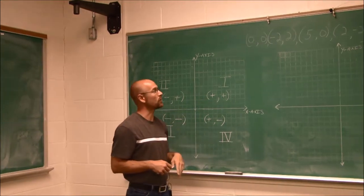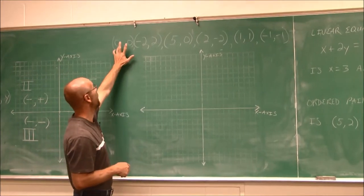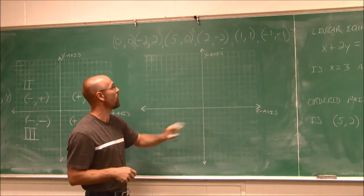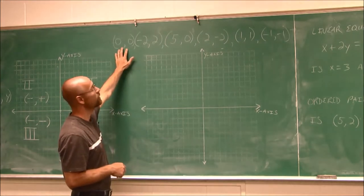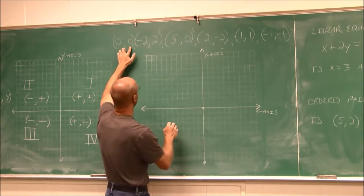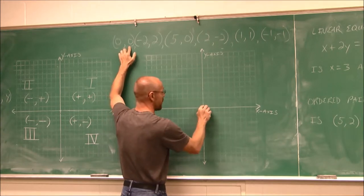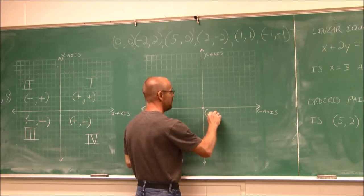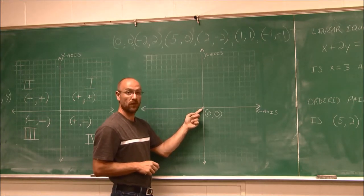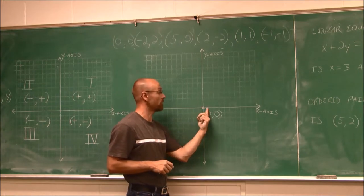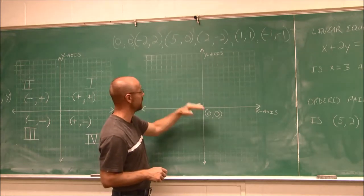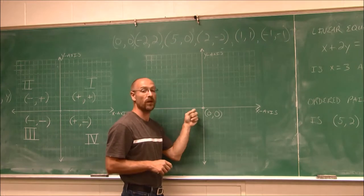Let's look at another graph where we're actually going to plot some ordered pairs. These are x, y values, so we have an x-axis and a y-axis, and it divides this plane into four quadrants. The point (0, 0) is where x is 0 on the horizontal number line and y is 0 on the vertical number line. This is a special point called the origin, because all the values originate from here — whether we're going right for positive x, left for negative x, up for positive y, or down for negative y. This is our point of reference.